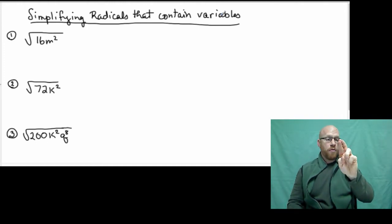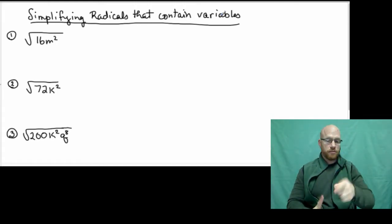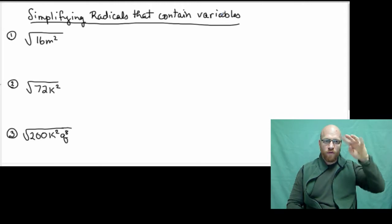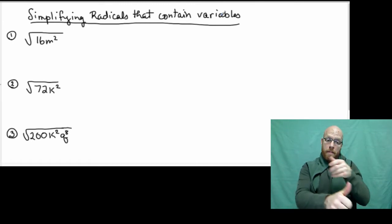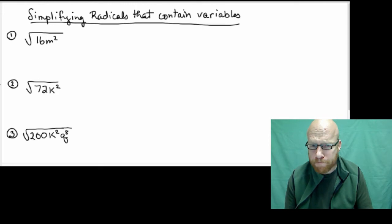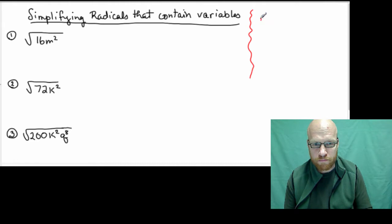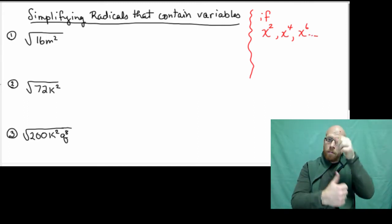Now variables, as an aside here, we'll consider variables that have exponents to the first power, second power, third, fourth, fifth, or whatnot. If a variable is raised to an even power, such as these, those are all even powers.